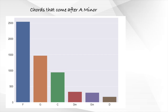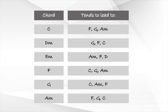Lastly, for the A minor chord, the F major chord wins by a large margin, followed by the G major chord, then the C major chord. For each of the chords from C major to A minor, the top 3 chords that tend to follow them are shown. Do take note of which chords tend to lead to which chord, as this can be useful when you're trying to figure out chords by ear.